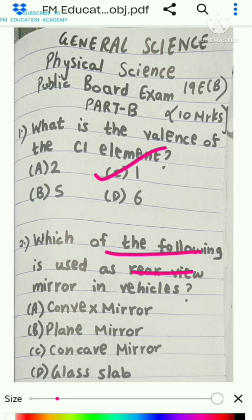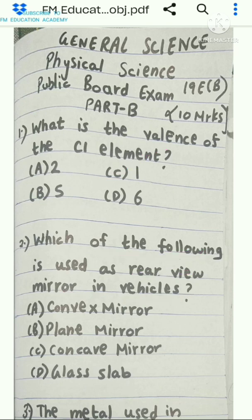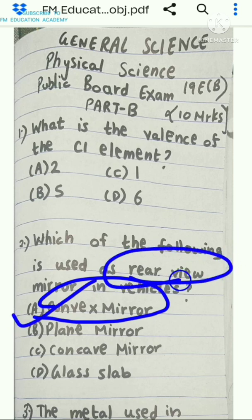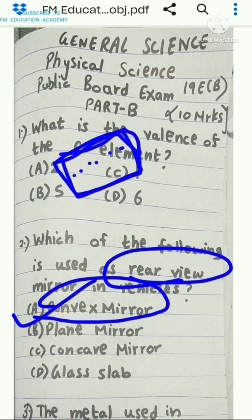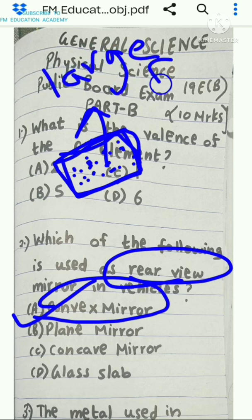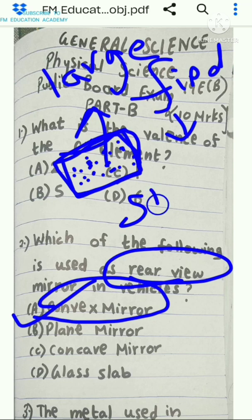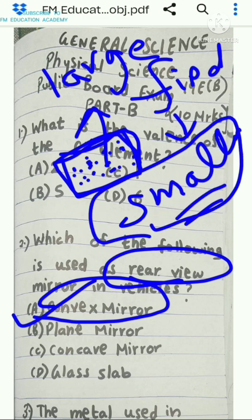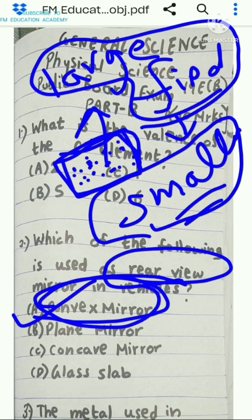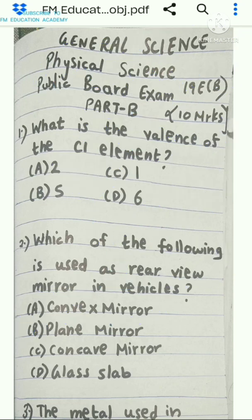The second question is: which of the following is used as a rear view mirror in vehicles? The answer is convex mirror, option A. Convex mirror is used because it has to show many cars or vehicles to the driver so they can drive properly and avoid accidents. A convex mirror gives a large field of view and shows objects smaller in size, so rear view mirror is a convex mirror.